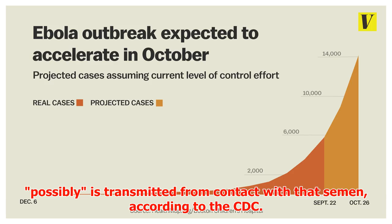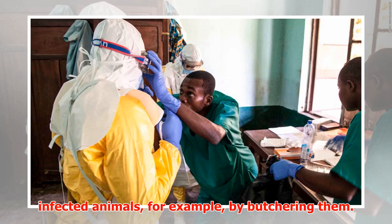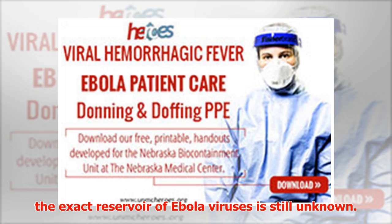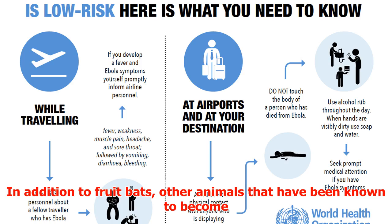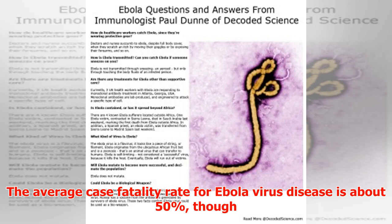However, the virus has been found in semen for up to three months and may possibly be transmitted through contact with that semen according to the CDC. Humans can also be exposed to the virus through infected animals, for example by butchering them. Researchers believe the most likely natural hosts are fruit bats, though the exact reservoir of Ebola viruses is still unknown. Other animals known to become infected include chimpanzees, gorillas, monkeys, forest antelope, and porcupines.